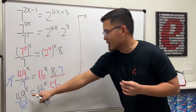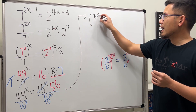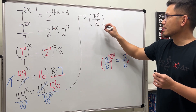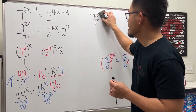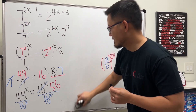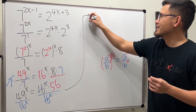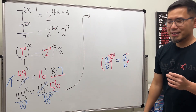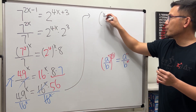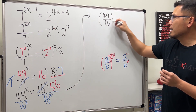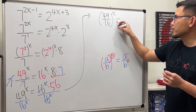This right here I'm just going to put it as 49 over 16. This gives us parentheses 49 over 16, and then to the x power, and then that is equal to...